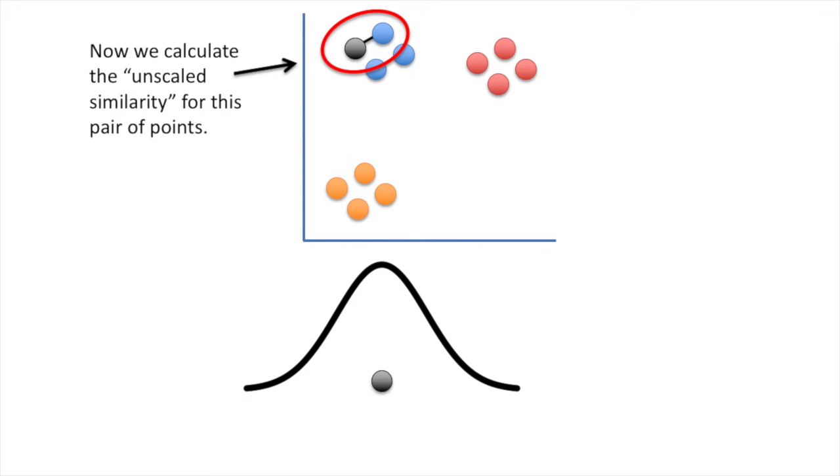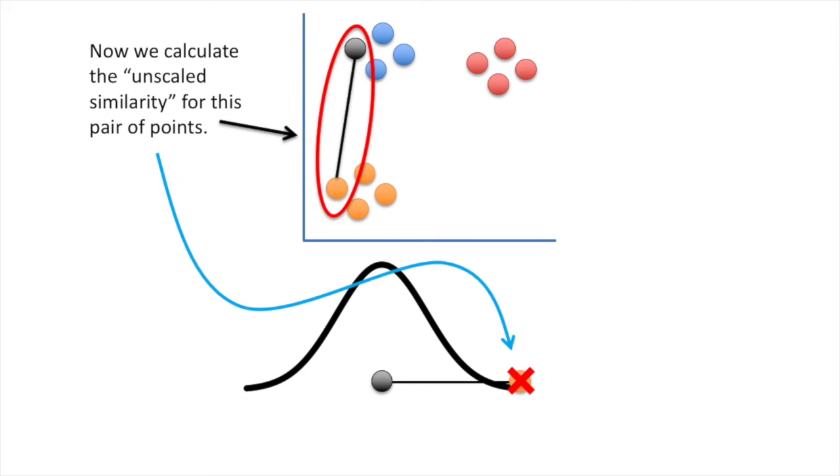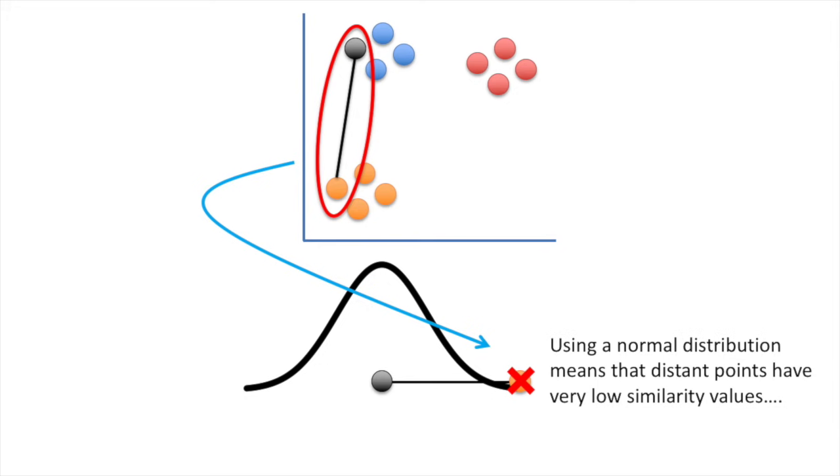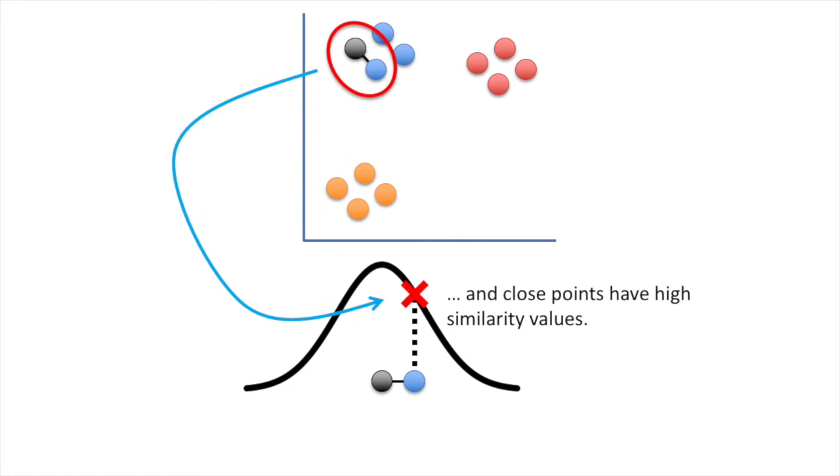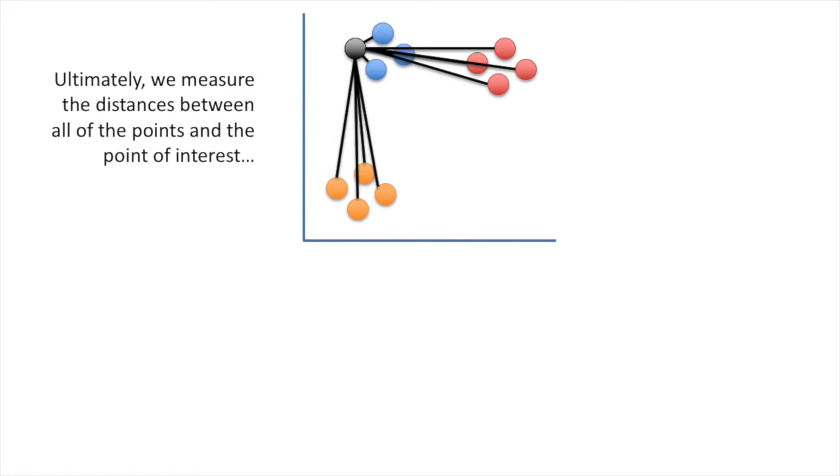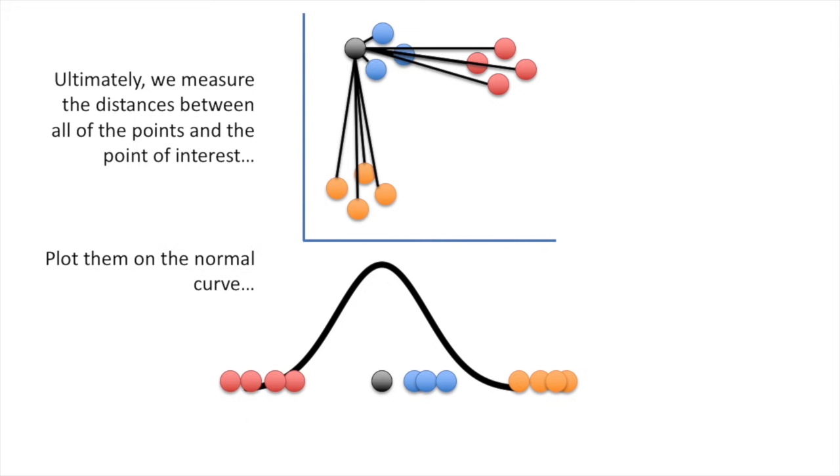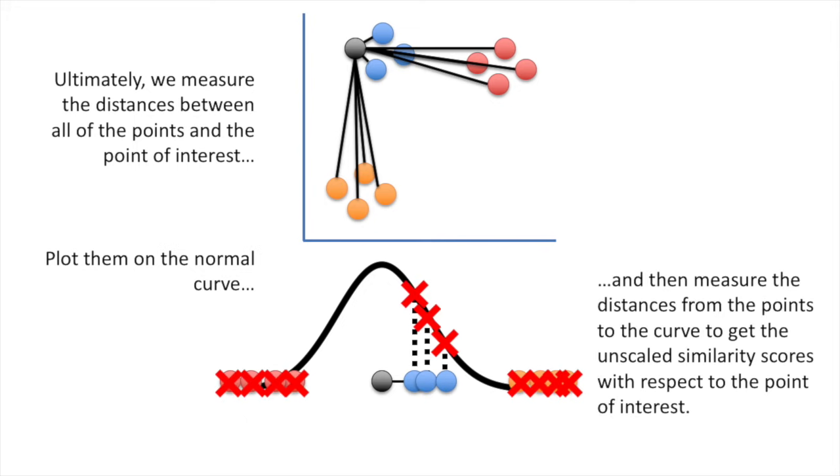Now we calculate the unscaled similarity for this pair of points. Now we calculate the unscaled similarity for this pair of points. And now we calculate the unscaled similarity for this pair of points. Et cetera, et cetera, et cetera. Using a normal distribution means that distant points have very low similarity values, and close points have high similarity values. Ultimately, we measure the distances between all of the points and the point of interest, then plot them on a normal curve, and then measure the distances from the points to the curve to get the unscaled similarity scores with respect to the point of interest.